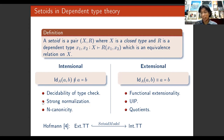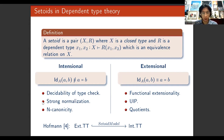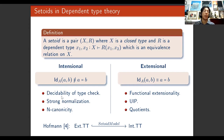Extensional constructs are supported by extensional type theory and they are used in everyday mathematics. For instance, we have the quotient constructs of functional extensionality and the uniqueness of identity proofs. The work of Hofmann proved that we can, using the so-called setoids model, recover the extensional constructs into intentional type theory.